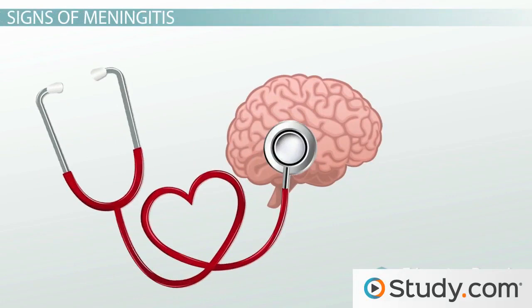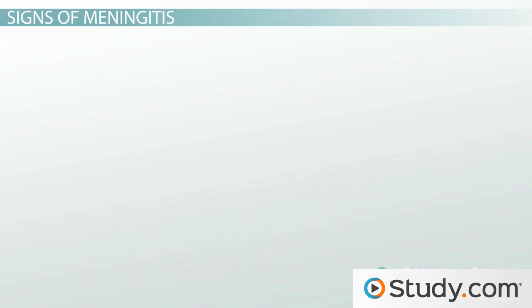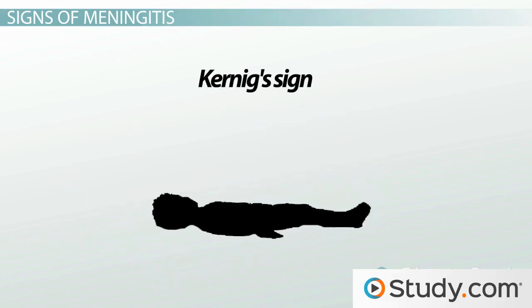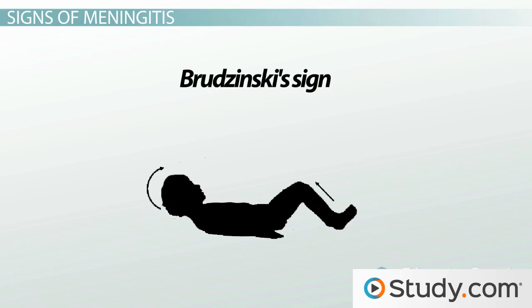Finally, there are neurological tests that may be indicative of a particular disease process. One of these is Kernig's sign of meningitis: if a person is lying down on their back with their hip flexed, full extension of the leg at the knee will be difficult and painful in people with meningitis. Another sign is Brudzinski's sign — if the patient is lying on their back, flexion of their neck elicits subsequent involuntary flexion of their hips and knees in cases of meningitis.